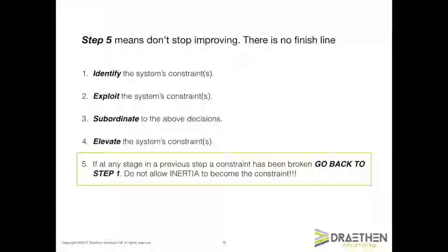Step five of the five focusing steps simply means continue to improve. Almost all manufacturing businesses recognise that they are in a competitive environment and if they don't continually improve, the competition will overtake them. Step five emphasises this reality and says that after improving, do not stop — get on and continue to improve, and the fastest way to do this is to go back to step one. Identify the new constraint, because the constraint determines the performance of the system as a whole, and improvement there is the fastest, surest way — in fact often the only way — to improve the system's performance as a whole. Let's now look at how we apply this framework to creating more capacity at the CCR in our little plant.